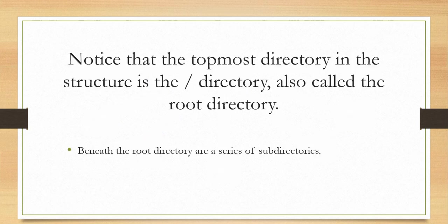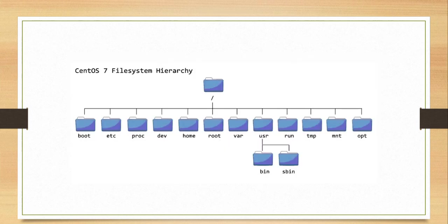The topmost directory in the structure is the forward slash directory, which is also called the root directory. Inside the root directory there are multiple subdirectories, and each of these subdirectories serves a purpose. This is CentOS 7's file system hierarchy. There are a lot of directories in the directory structure — these are the ones that are really important and everyone must know about, and some of these I'll be going through in the rest of the video.